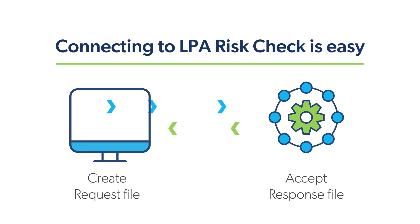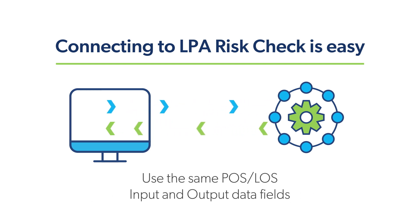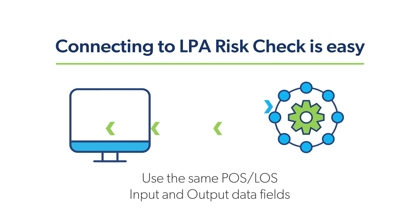Once the Risk Check request and response connection is established, users will continue to seamlessly use their existing POS or LOS data fields to capture the required Risk Check data. Similarly, data returned in the response file can be used to populate applicable fields in the lender's systems.